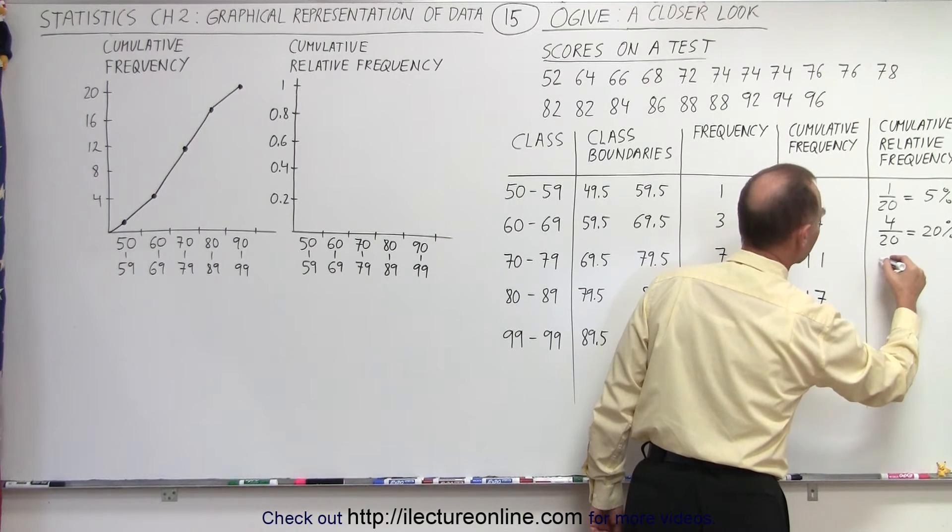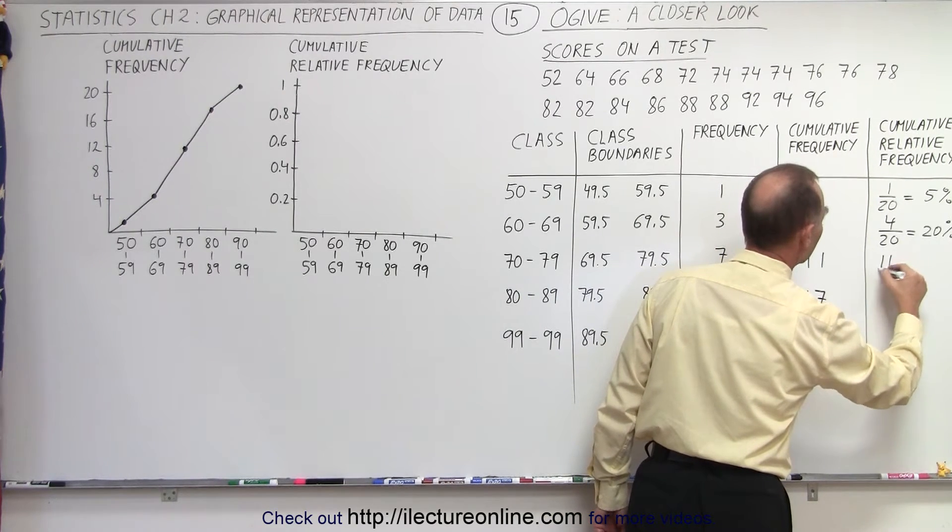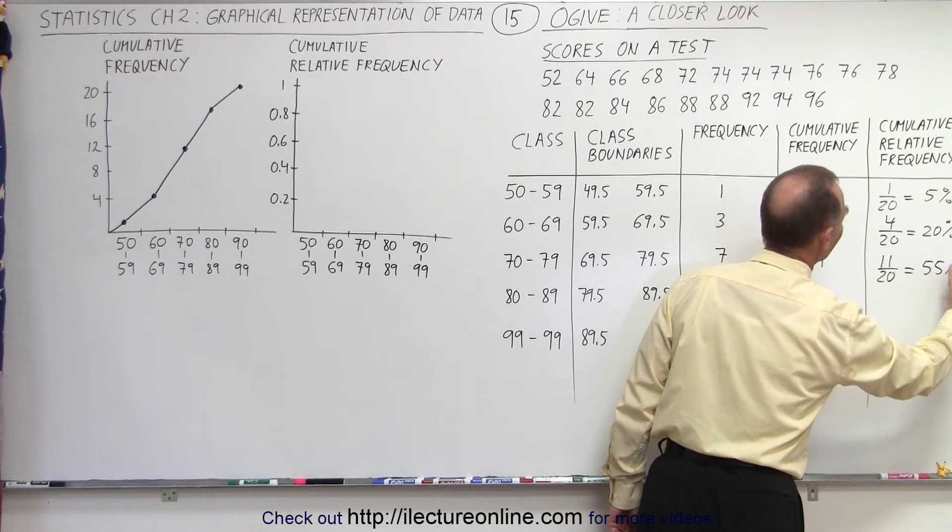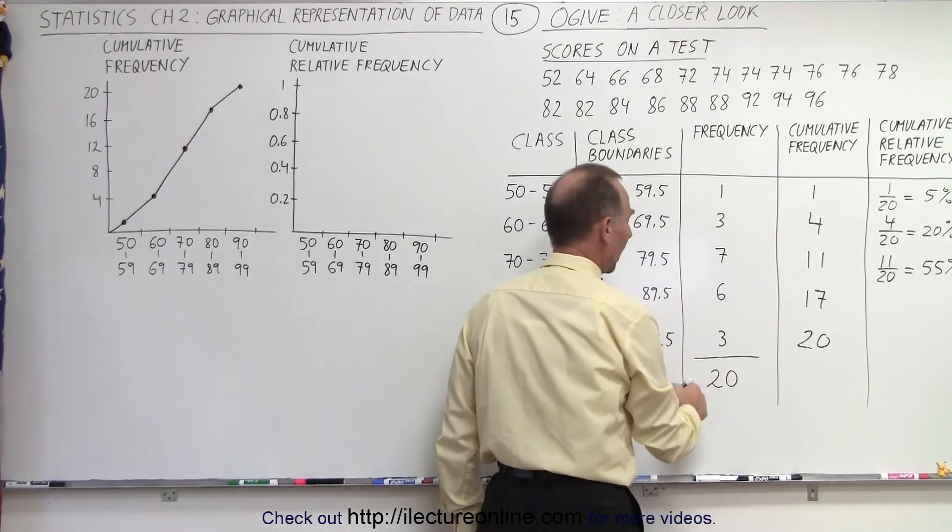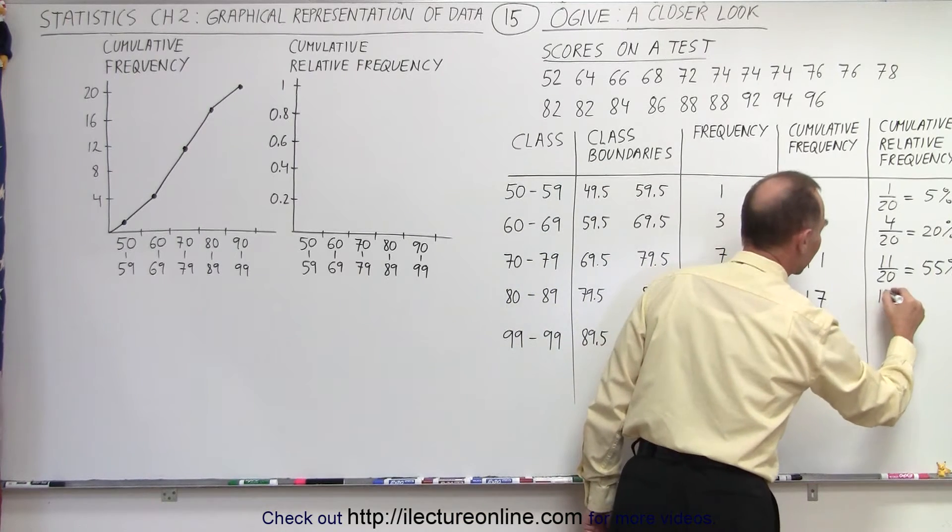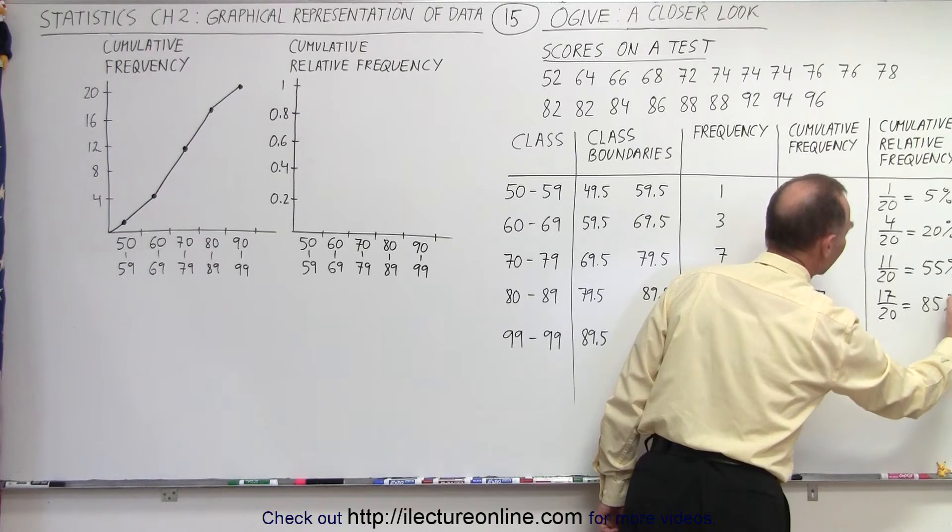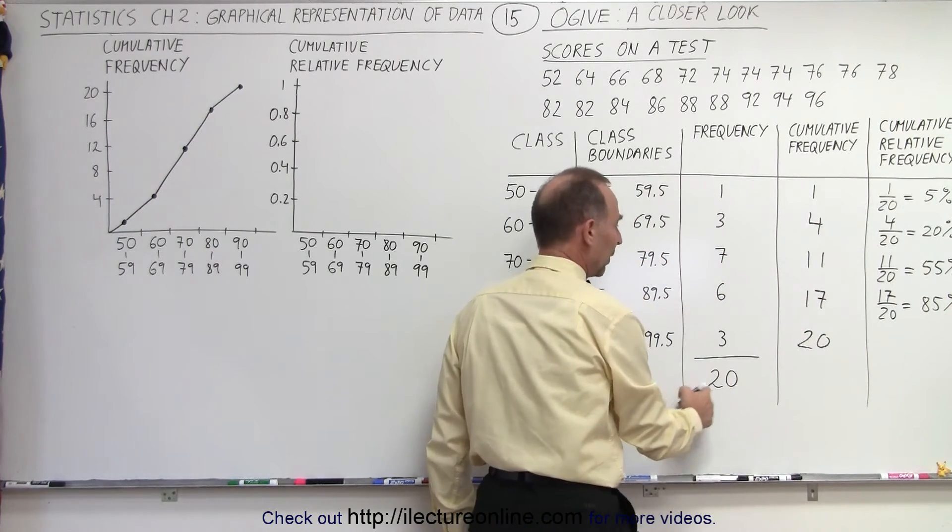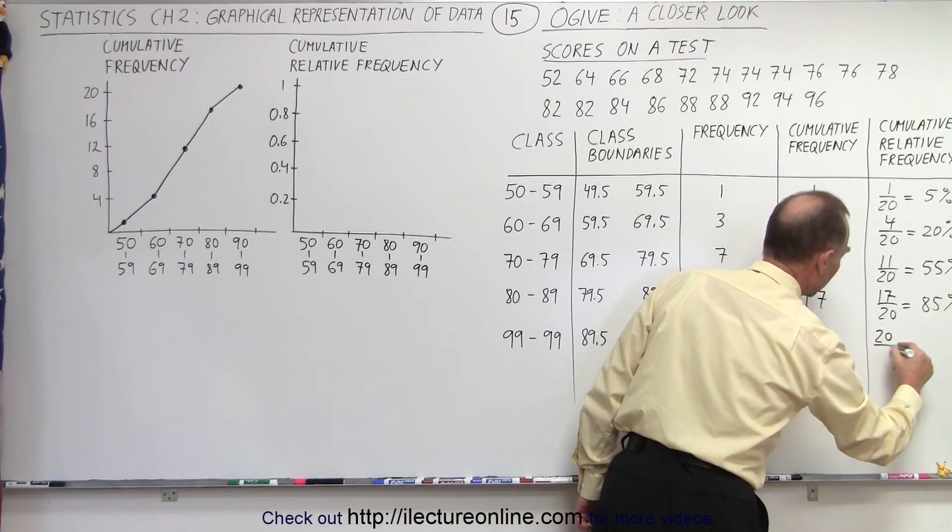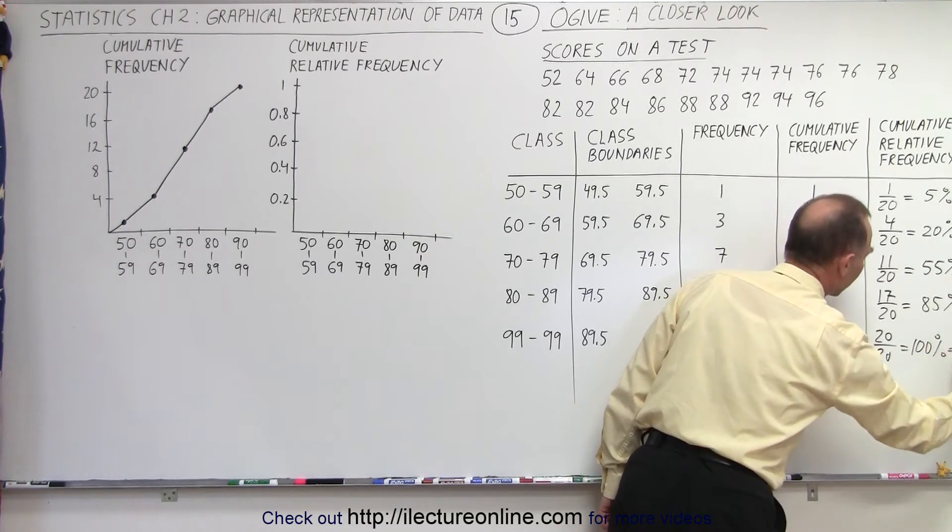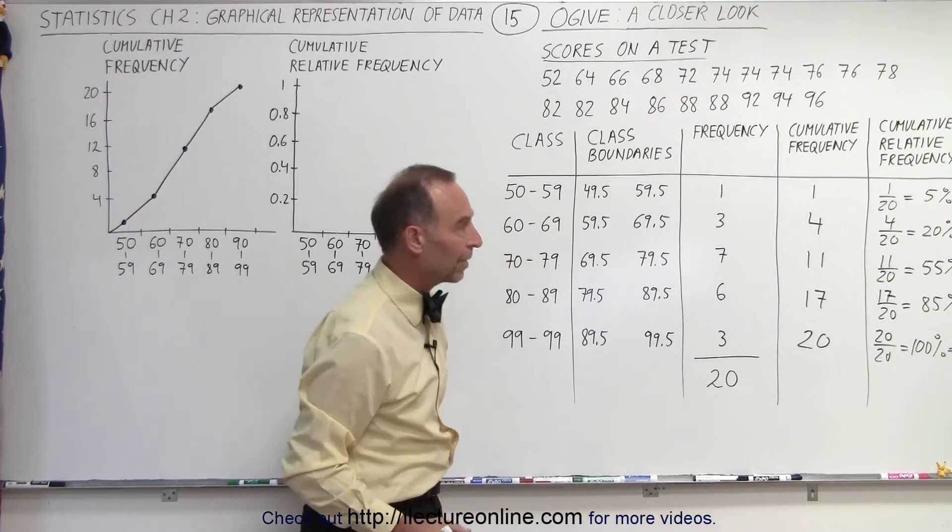That would be equal to 11 out of 20, which would be equal to 55%. And then we add six more. So now we have 17 out of 20. That now represents a total of 85%. And when we add three more, we get 20 out of 20. That represents 100%. Or of course, that represents 1, the total amount.